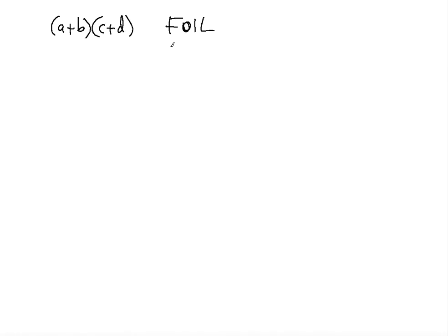FOIL means: F means first, O means outer, I means inner, and L means last. And what do those steps really mean?